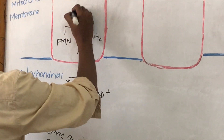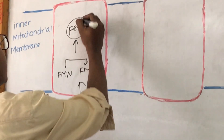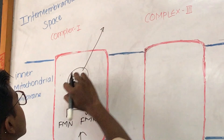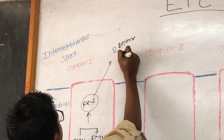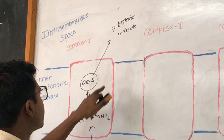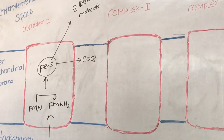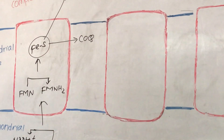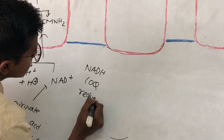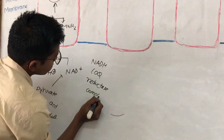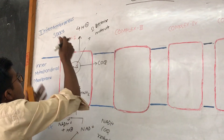FMNH₂ donates its electron to an iron-sulfur complex. This is a simple iron-sulfur complex where iron is associated with two cysteine amino acid molecules — a simple Fe-S complex. This Fe-S complex donates its electron to ubiquinone, or coenzyme Q. Since there is a transfer of electrons from NADH to coenzyme Q, this complex is named NADH coenzyme Q reductase. This reaction is associated with pumping of 4 protons into the intermembranous space.